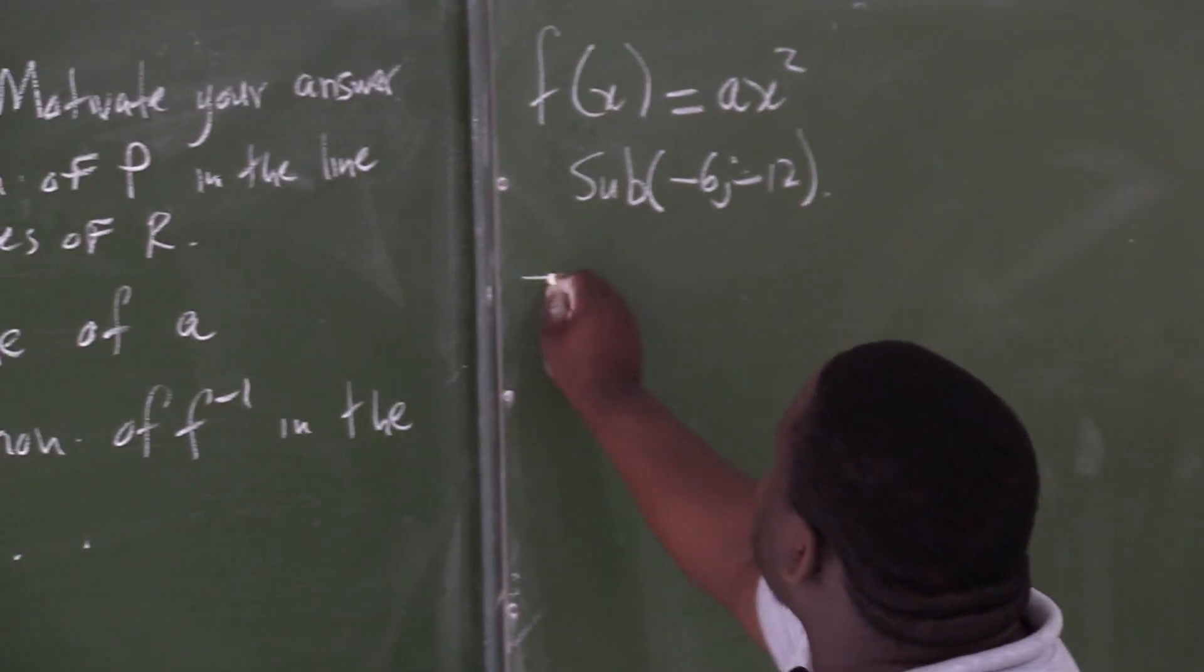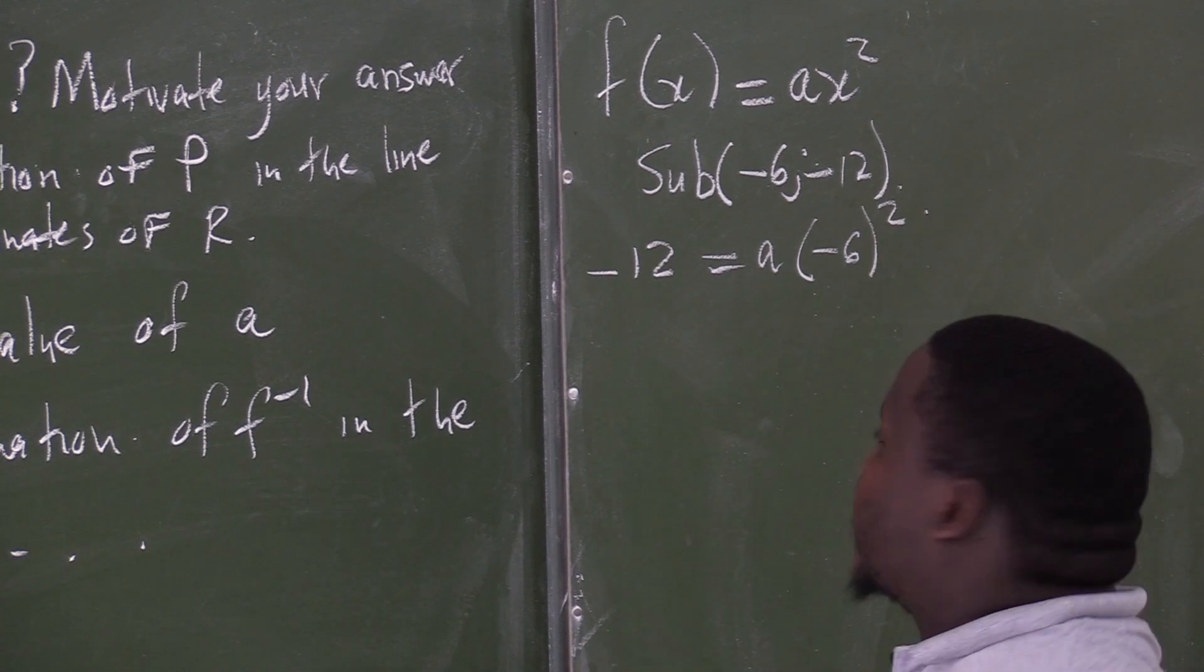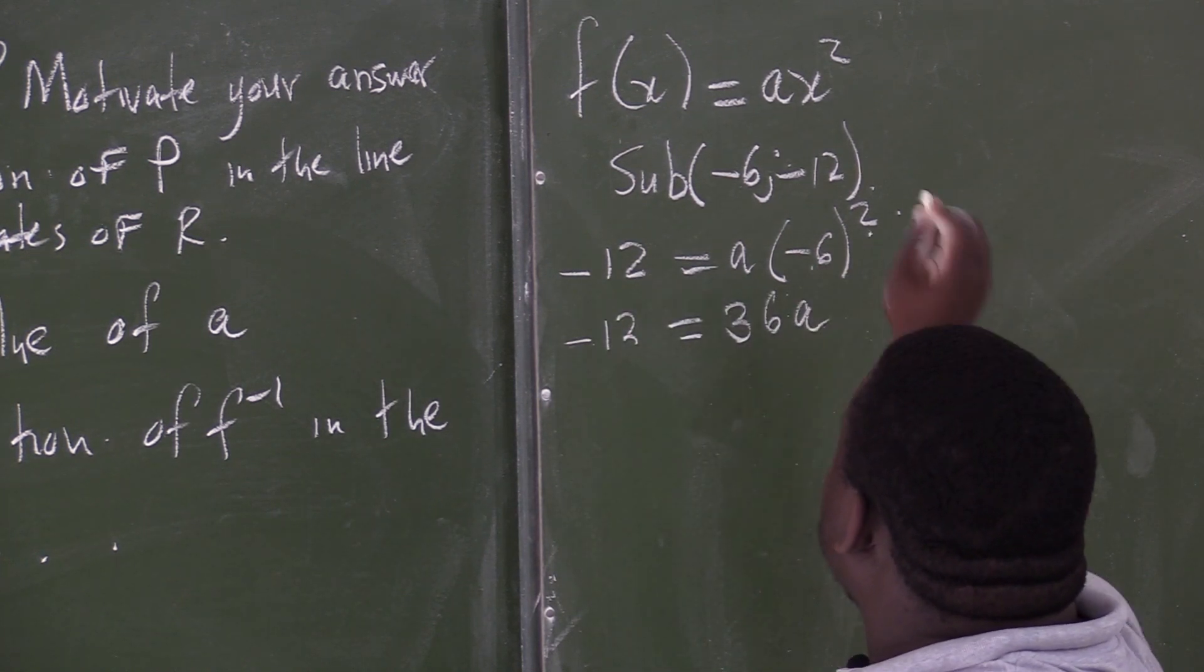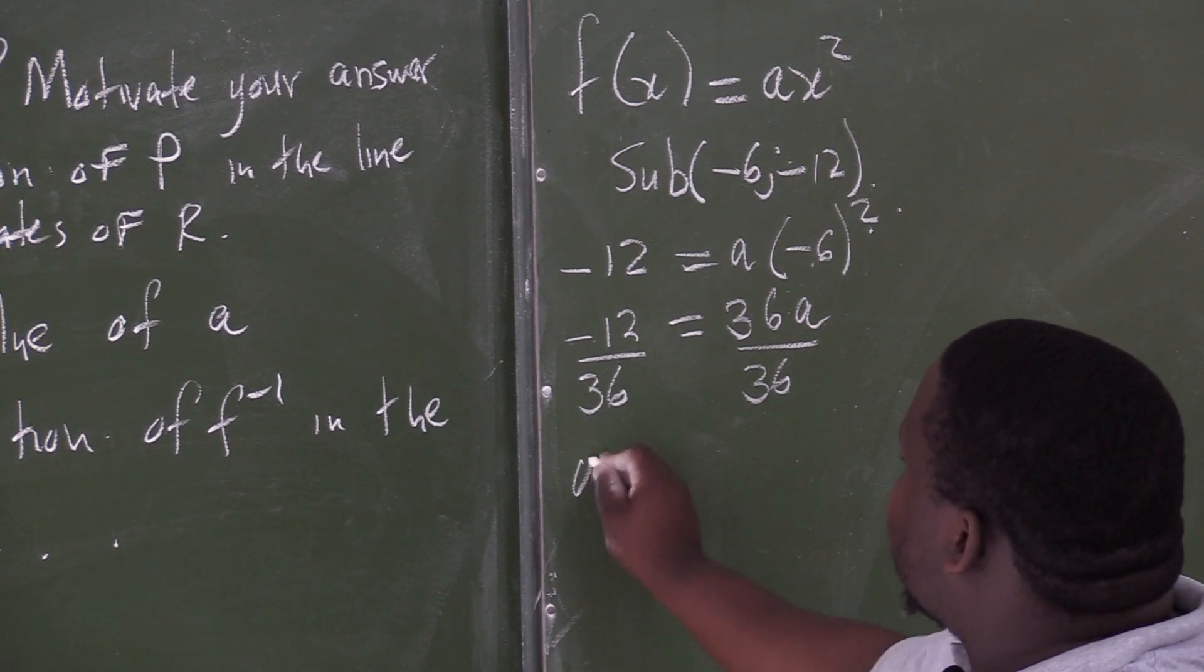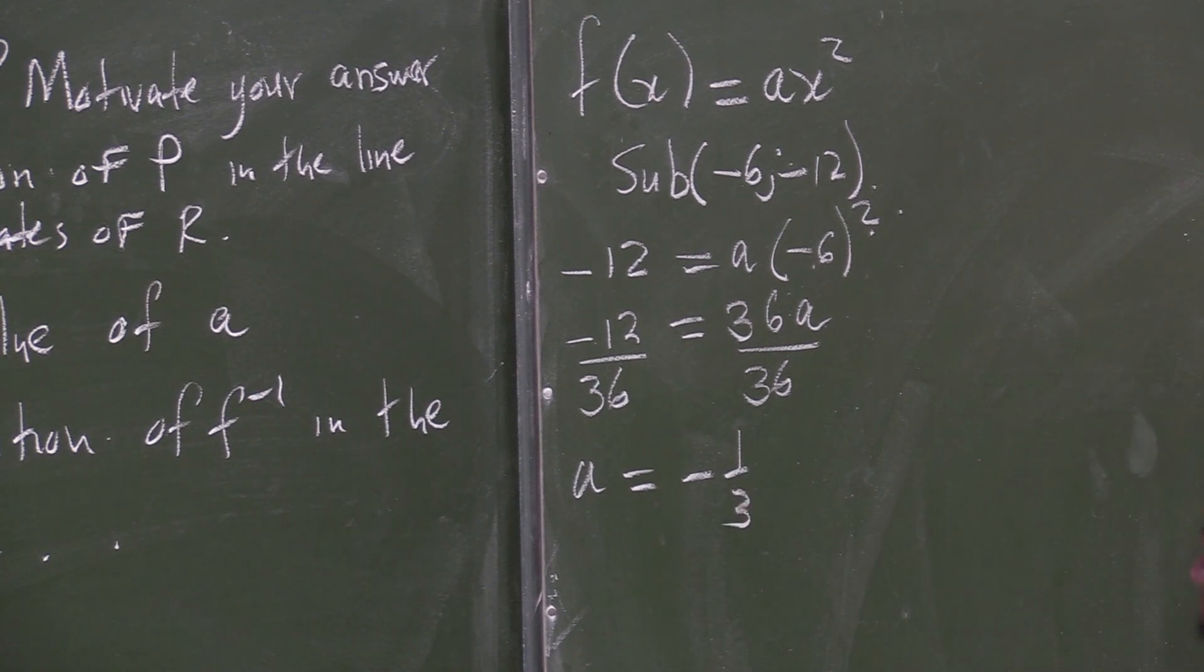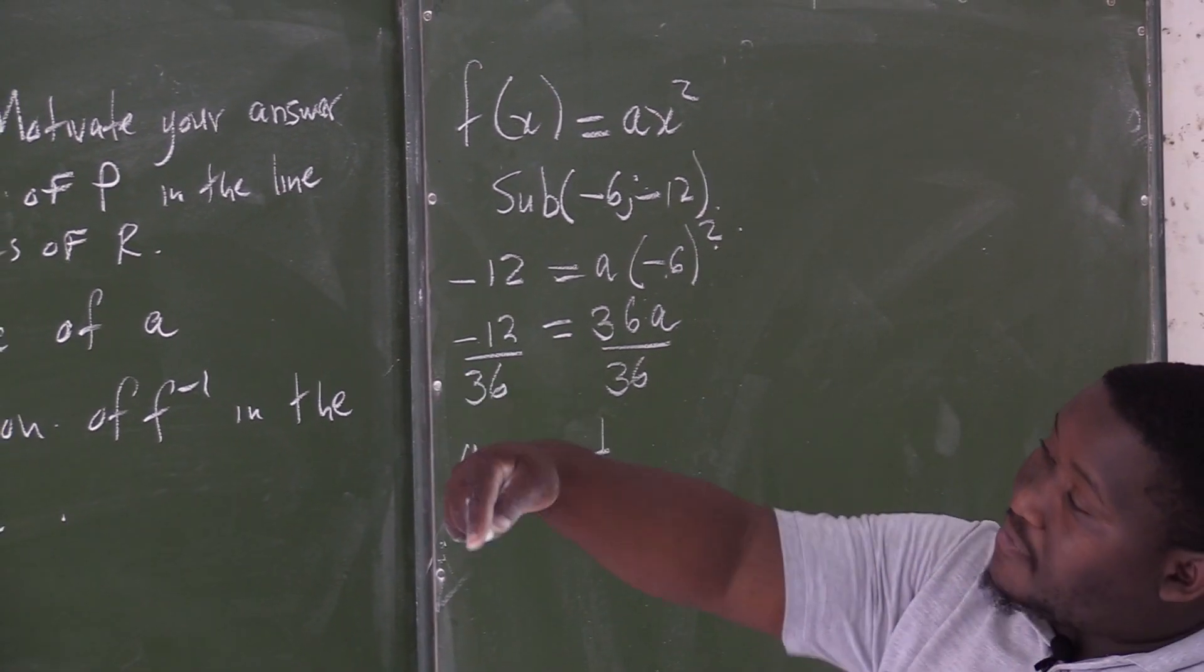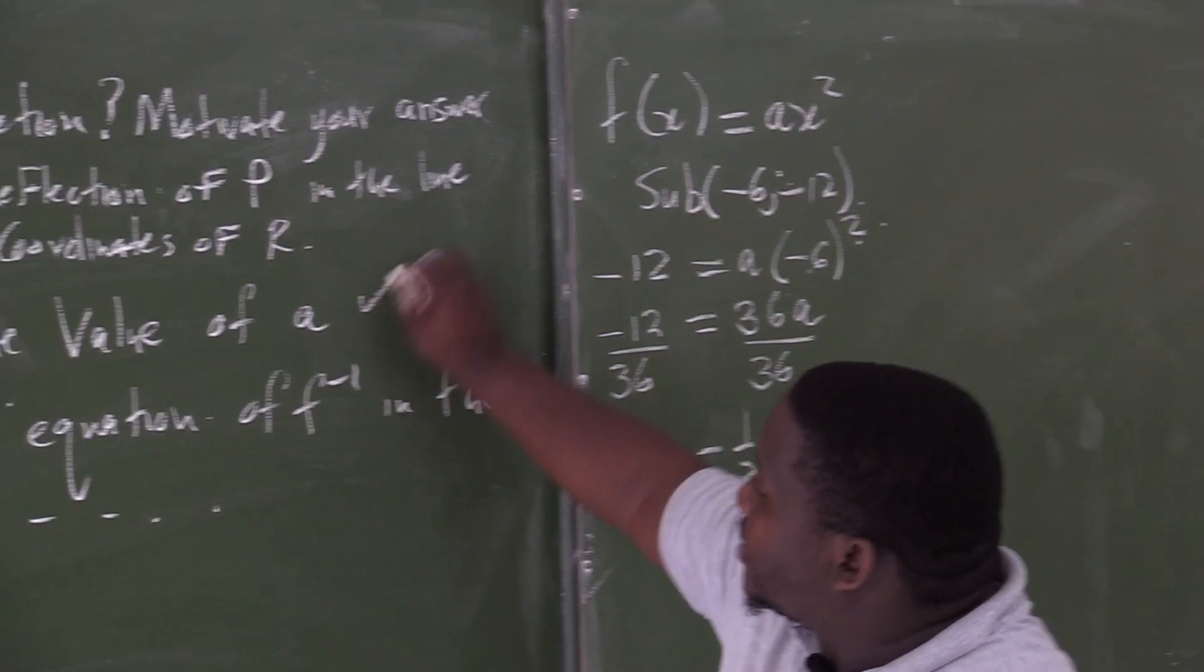So, instead of y, we are going to substitute a negative 12. But instead of x, we are going to put negative 6. And here, we are going to solve for a. So, this is still negative 12, which is 36a. Then, we can divide by 36. So, that you can have a value of a, which is a negative 1 over 3. So, the value of a is negative 1 over 3. Now, let's check. Is this answer correct? The answer is negative, right? The answer is correct. Because you can see, there's the inverse. So, the graph of f is coming from the graph that has a leading coefficient, which was a negative. So, this one is done as well.